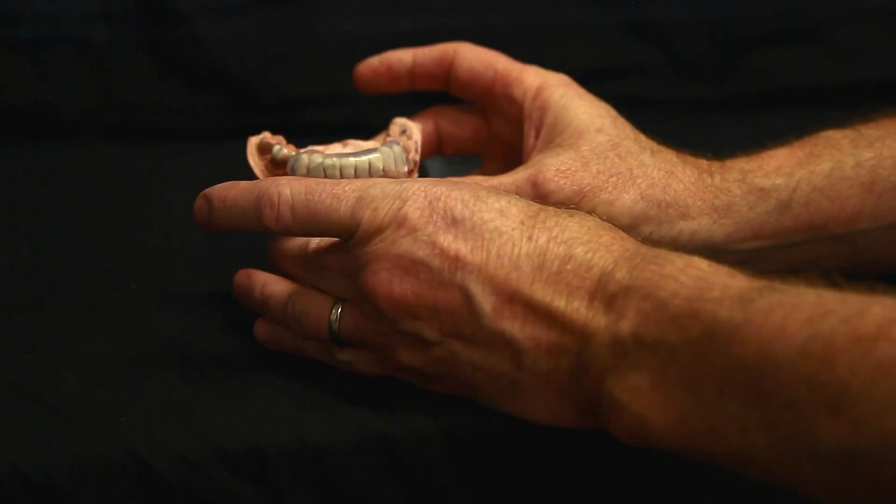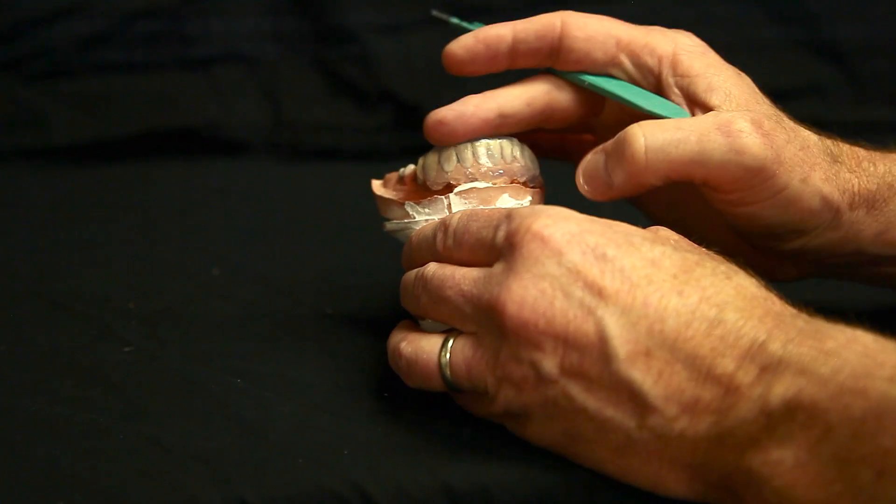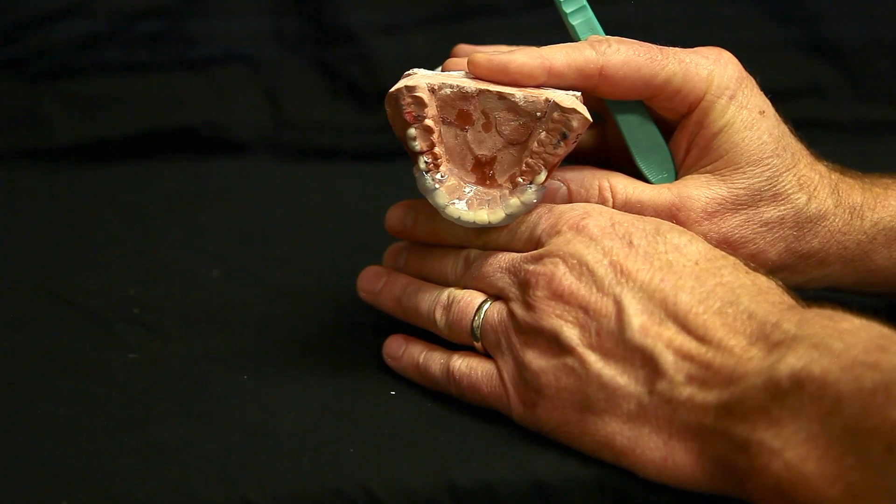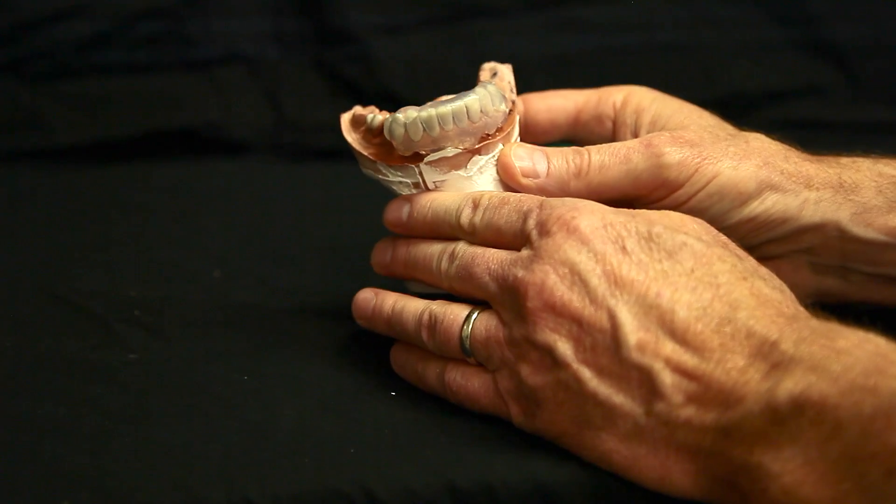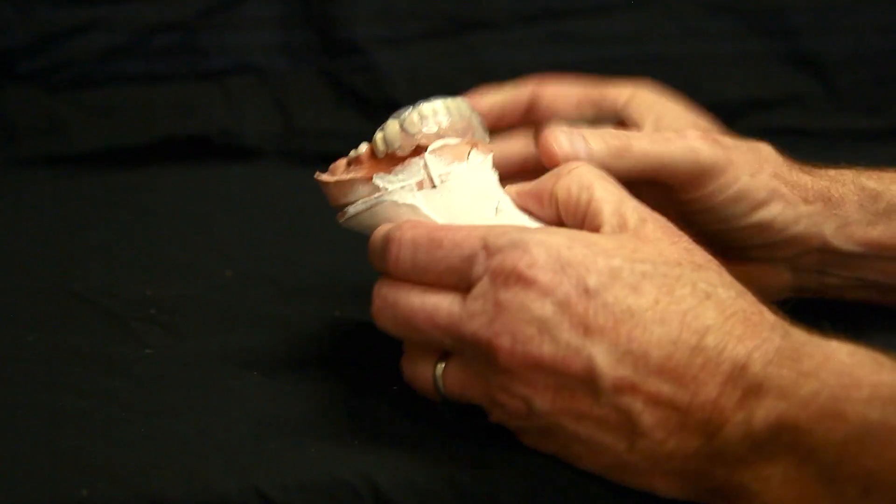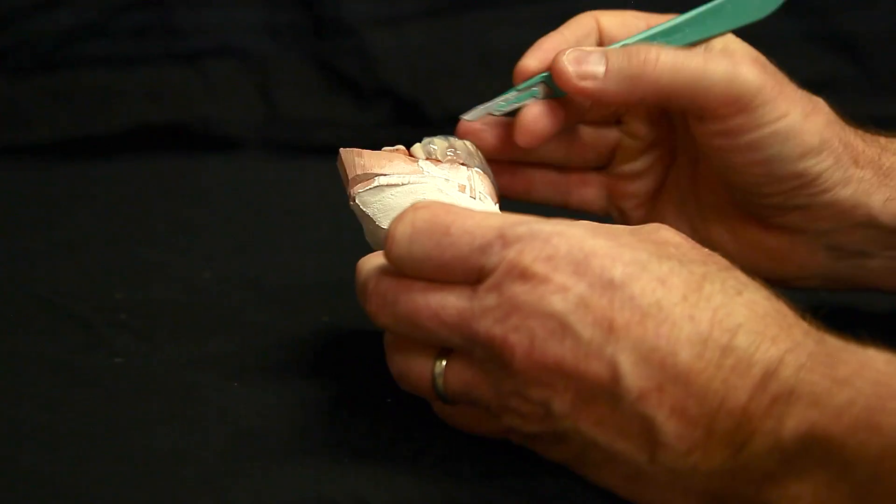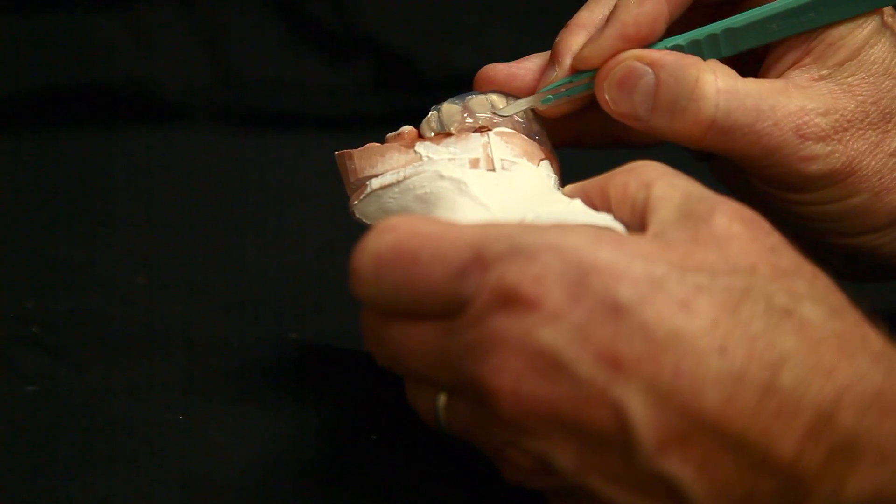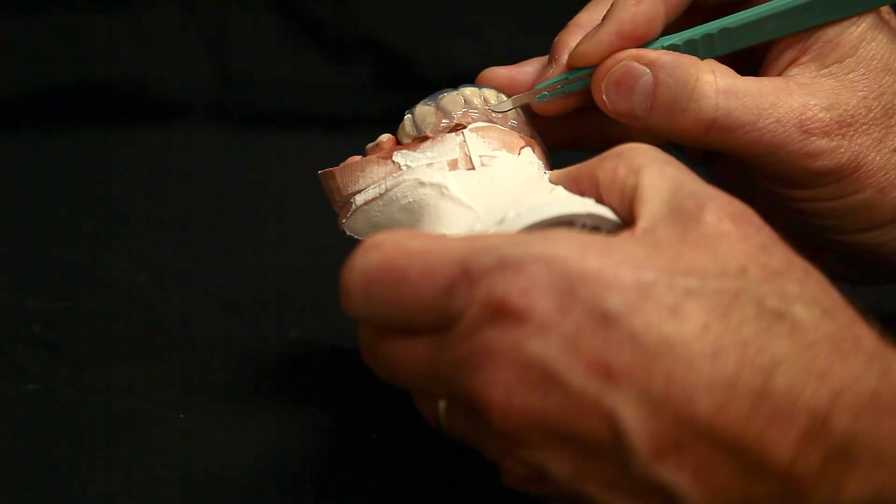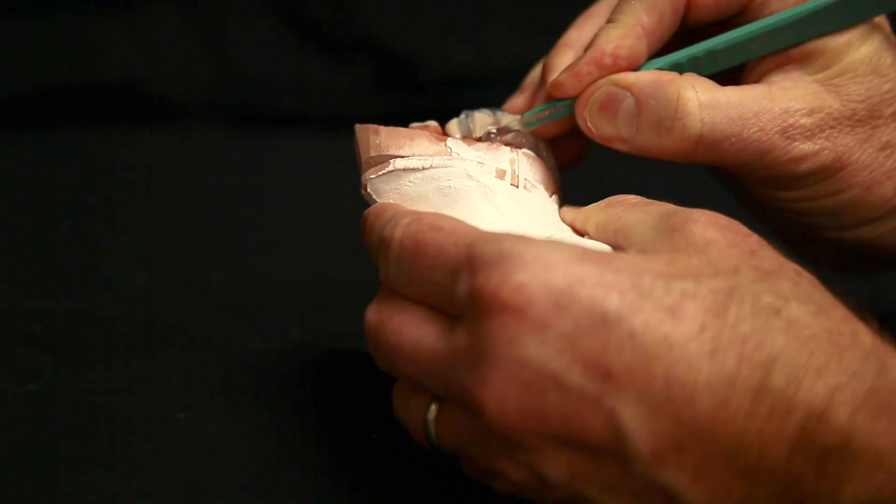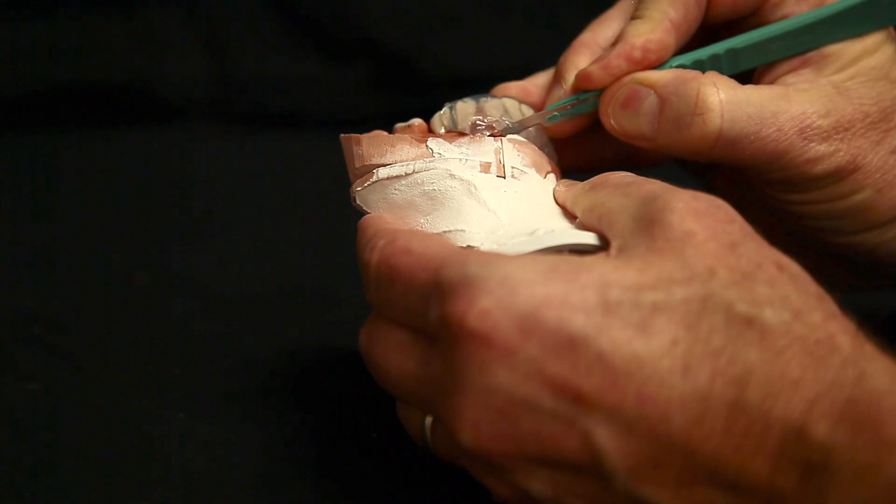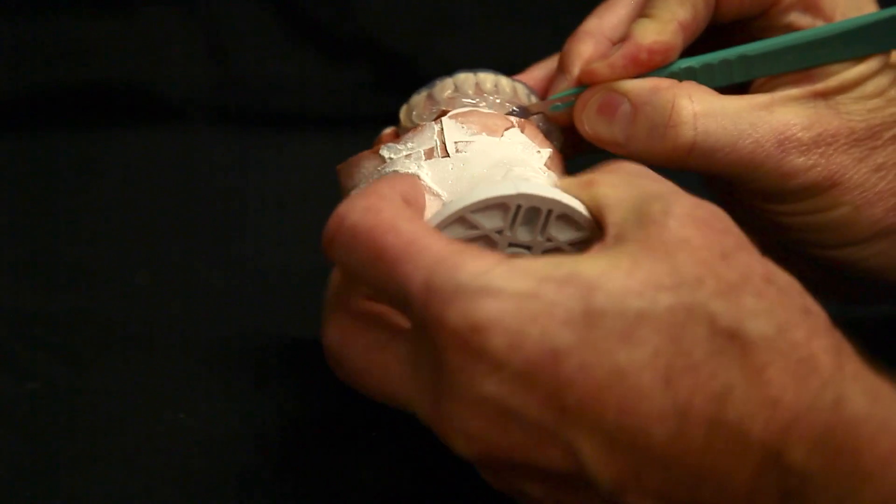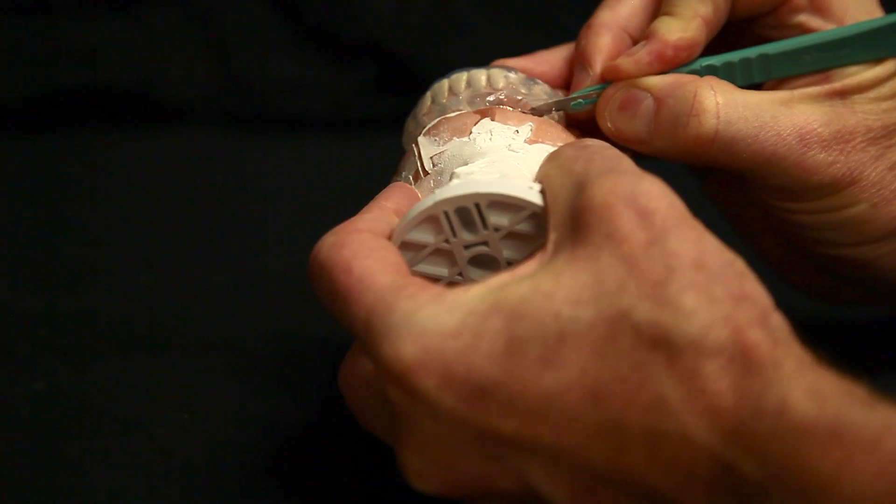This material sets fairly fast, so you need to kind of work fast. That's about it. Let's let that set. Okay, so the material is completely set and we got on the linguals nice and smooth and you can see it's a pretty consistent thickness all the way through. All you're going to do is just take a number 15 or whatever blade you're comfortable with and you want to cut it just below the edge of the wax-up.